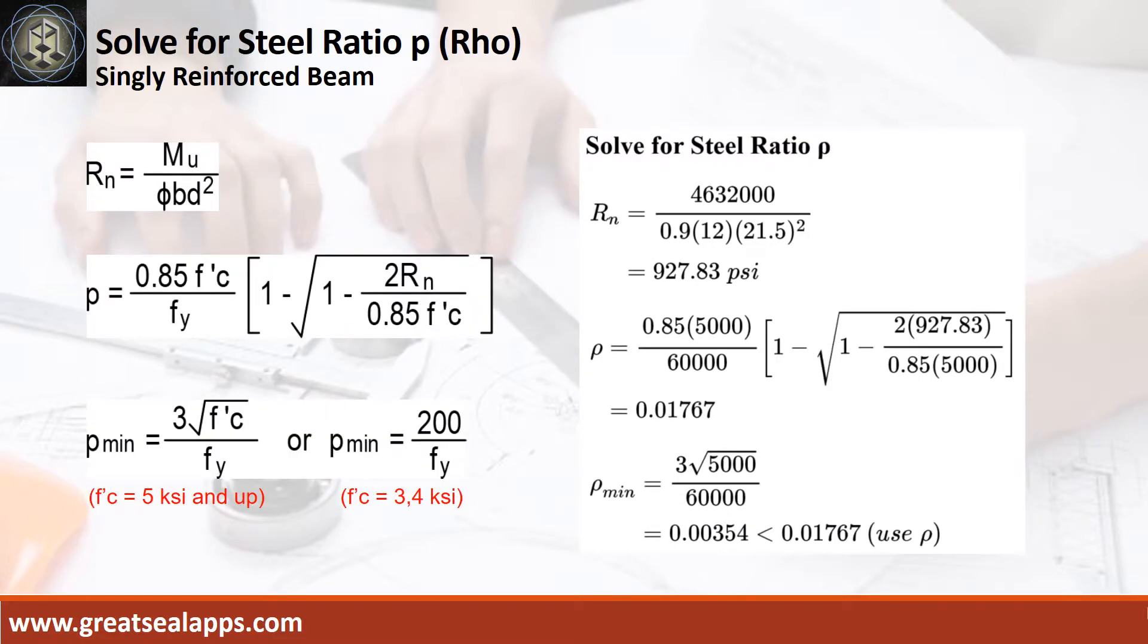Given maximum moment equals 4,632,000 inch pounds, resistance factor equals 0.9, B equals 12 inches, and D equals 21.5 inches, the beam design ratio RN equals 927.83 PSI, and reinforcement ratio rho equals 0.01767.